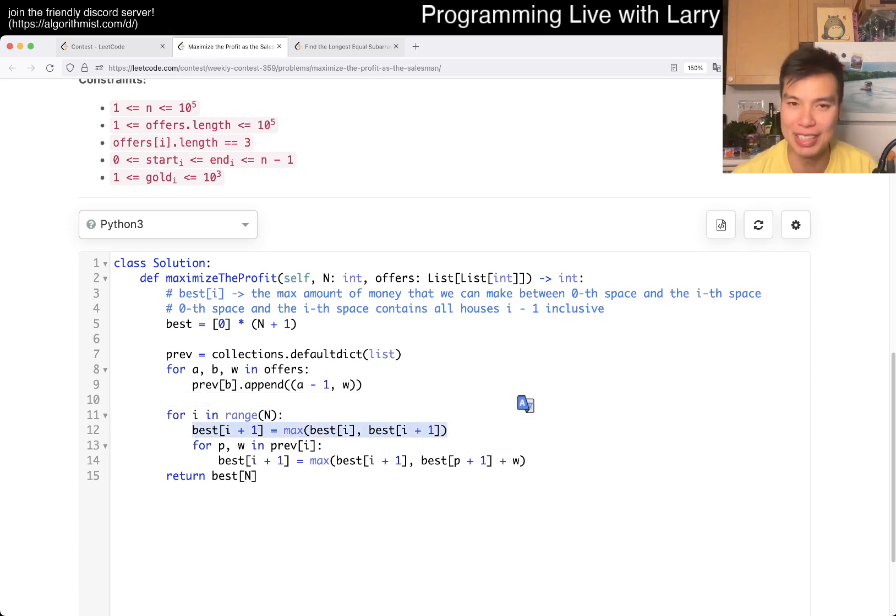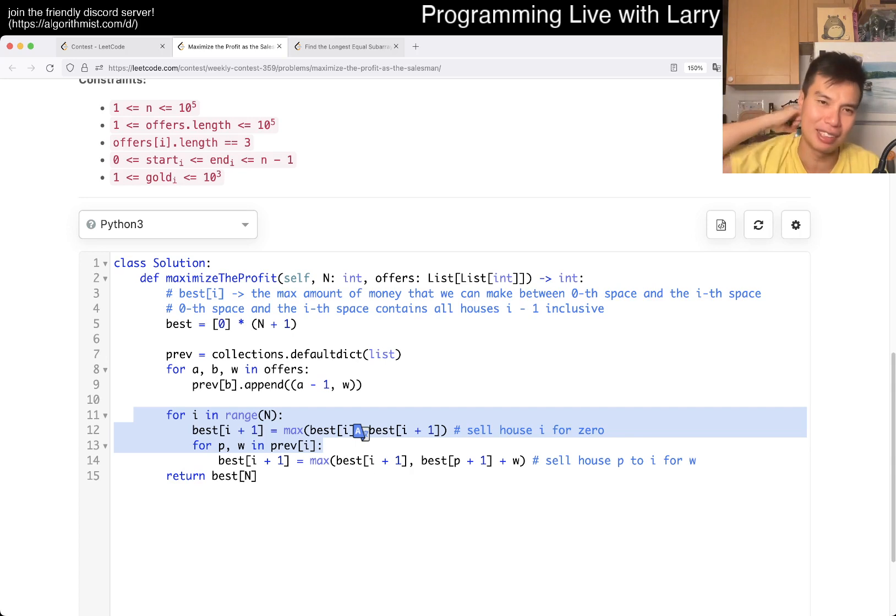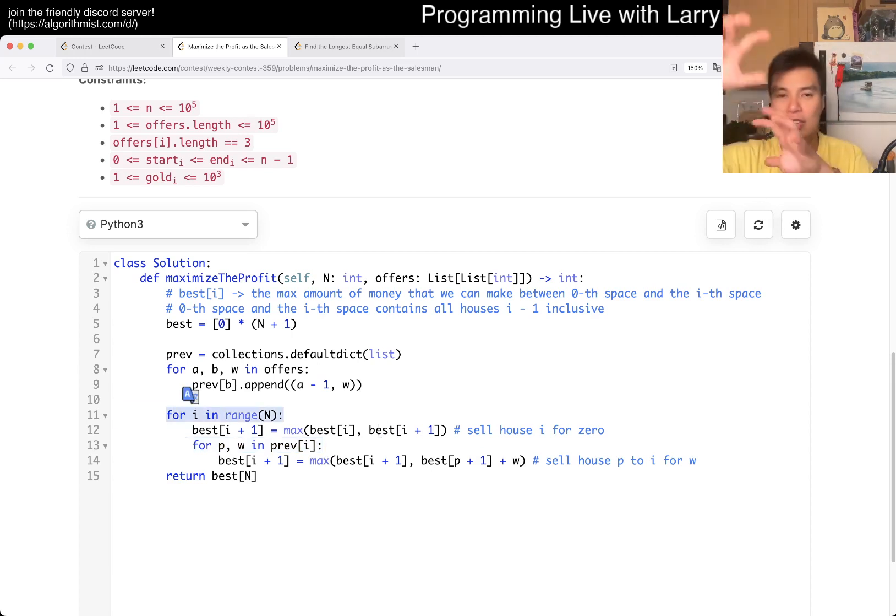So this is basically for the implicit edge of selling house I. Oh, no. Yeah, house I plus one. No, house I. Yeah, house I, you sell it for zero, right? So sell house I for zero. And this is the offer sell house P to I for W. That's basically the idea. Yeah, and this is for every edge. And you know, there are two for loops and you may be like, oh yeah, so why is this not 10 to the fifth square, right? Well, because this is, this only happens, we only have one edge for every edge in the input. So that means that this will only, the summation of all these edges is going to be at most 10 to the fifth. And this obviously is also 10 to the fifth.